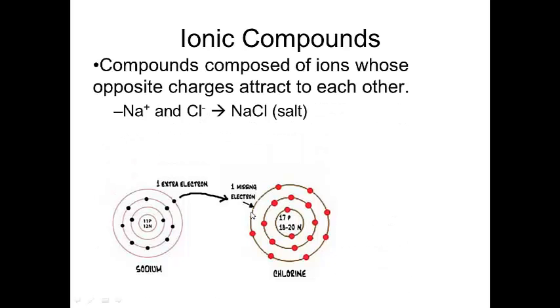So ionic compounds, the way that they get made is where their opposite charges are going to attract to each other. So a very common ionic compound is salt, sodium chloride.